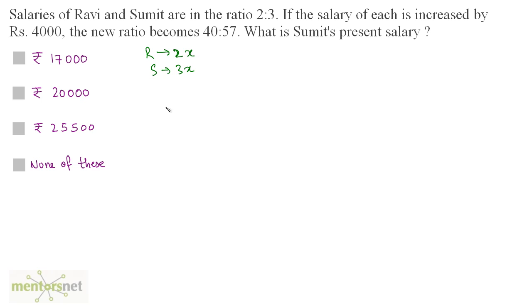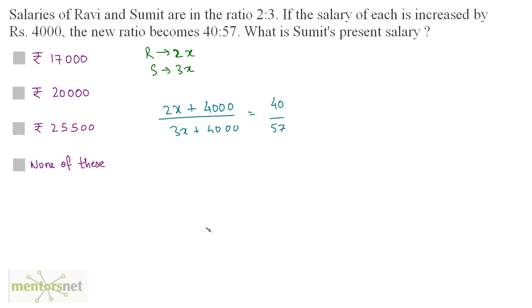If I increase the salary of each, so (2x + 4000) divided by (3x + 4000) is equals to 40 by 57. Now we can solve this equation and get the value of x, which is a common factor between Ravi's and Sumit's salary.